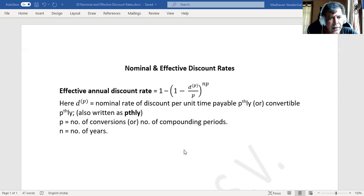If I consider this annual discount rate as small d, and if I bring this d to this side and this part to that side—taking the negative part to the left side and positive d to the right side—we will have 1 minus d equals 1 minus dp by p to the power of np.